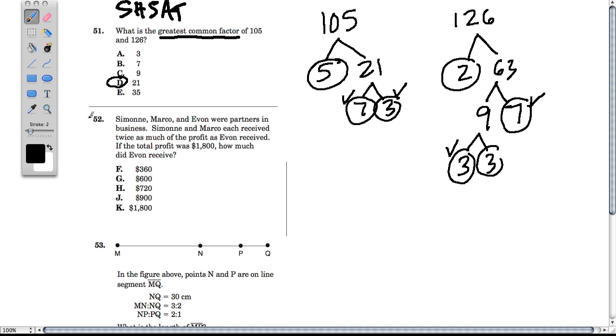Okay, so now we've got a question 52. I think you'll see a lot of questions like this where you'll hear about these different people. In this case, Simone, Marco, and Yvonne. You're partners in business, and you'll get this kind of language where one is making twice or three times as much as the other. If the total profit is blank, how much did Yvonne receive?